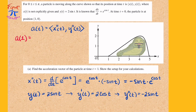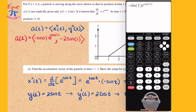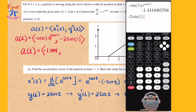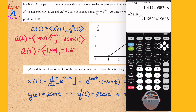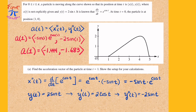Substituting the value of t equals 1, the first component is negative sine of 1 times e to the cosine of 1, and the second component is negative 2 sine of 1. Using our calculator, the first component has a decimal value of approximately negative 1.444, and the second component is approximately negative 1.683. So that answers part a.